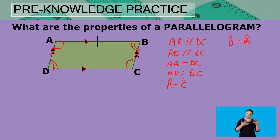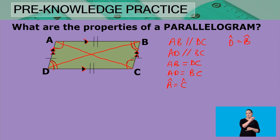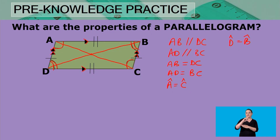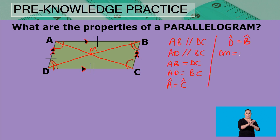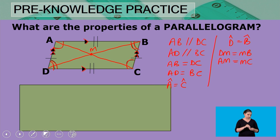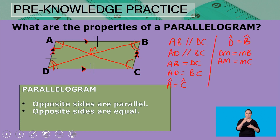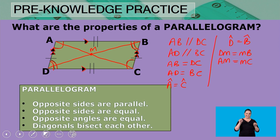When it comes to the diagonals, DB is a diagonal as well as AC. The diagonals of a parallelogram bisect each other. So if the point where they intersect is point M, then DM equals MB, and AM equals MC. In summary, the properties of a parallelogram are: opposite sides are parallel, opposite sides are equal, opposite angles are equal, and the diagonals bisect each other.